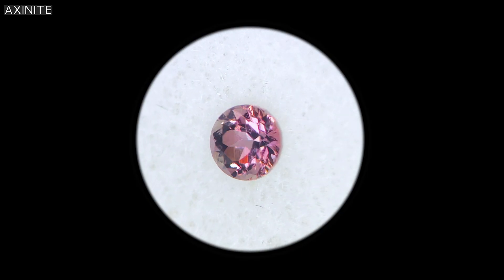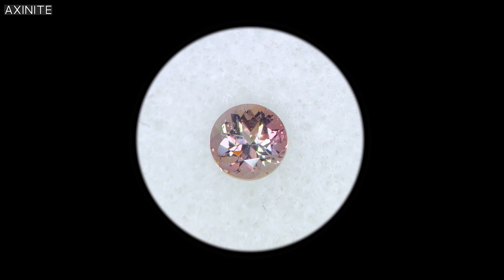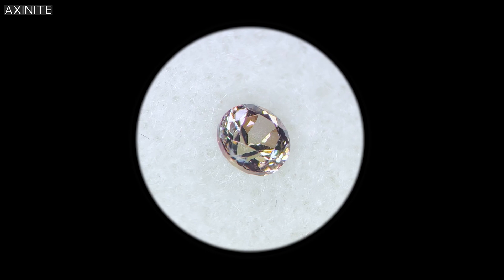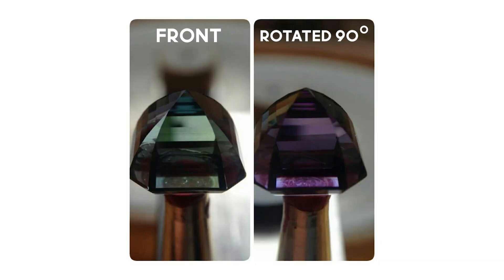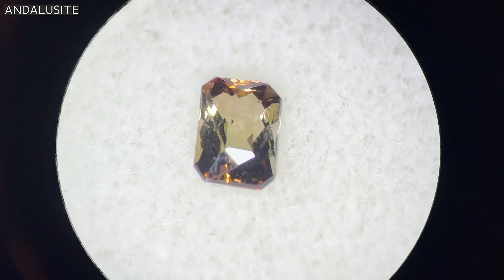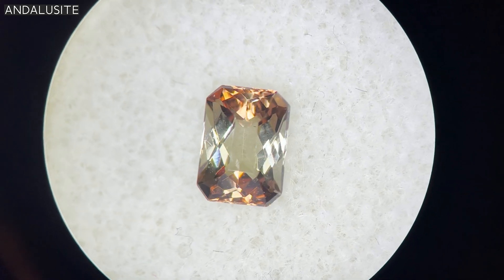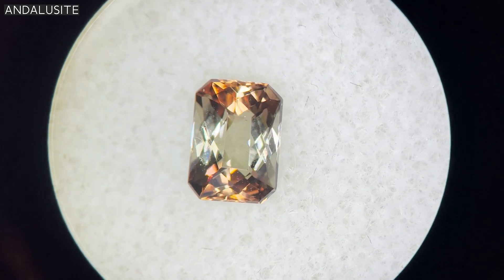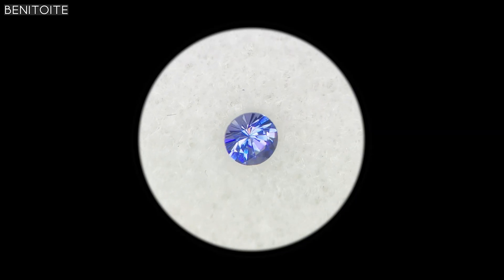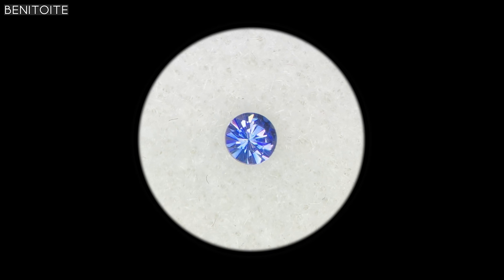A second effect that can arise in some doubly refractive materials is dichroism, or more generally pleochroism. The color you see in the stone is dependent on the angle of view. The color you see is the transmitted light — the light that is not being absorbed — and the wavelengths being absorbed are different depending on the direction of travel, so you end up seeing two or more different colors present in the same stone.